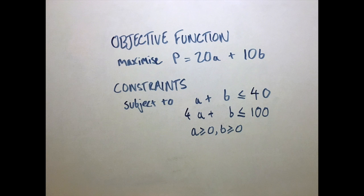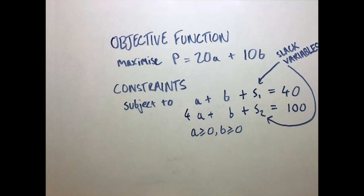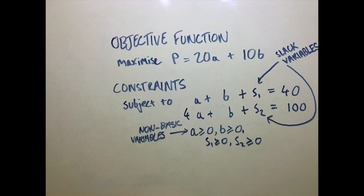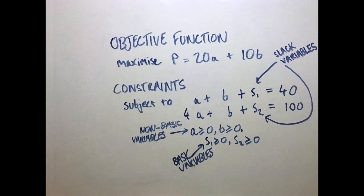We're now going to introduce slack variables to each constraint. These cause the inequalities to become equalities and we can graphically represent them now, but before we do that we have to add non-negativity constraints to the slack variables also. The original variables from the objective function are referred to as non-basic variables and the slack variables are referred to as basic variables.